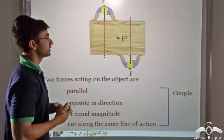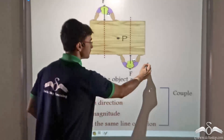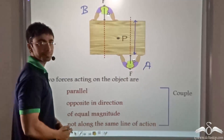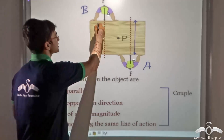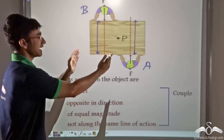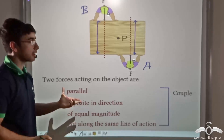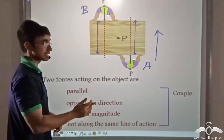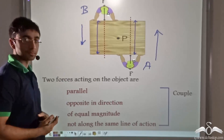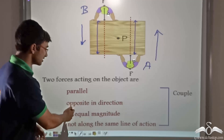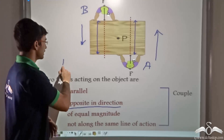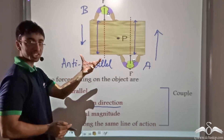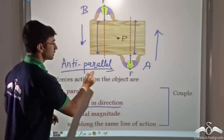Consider these two people applying a force on the table — person A and person B. The line along which person A applies force and the line along which person B applies force are not the same; they are parallel but the forces are in opposite directions. Person A applies force in one direction while person B applies force in the downward direction. So despite the lines being parallel, the forces are opposite in direction — we can say these forces are anti-parallel.